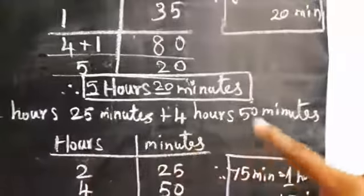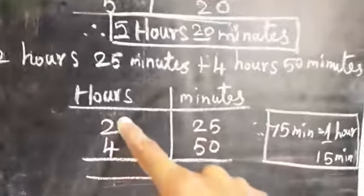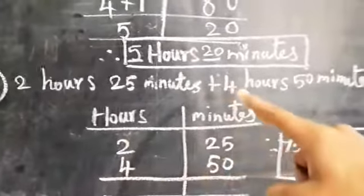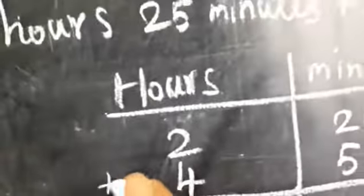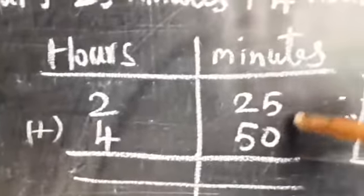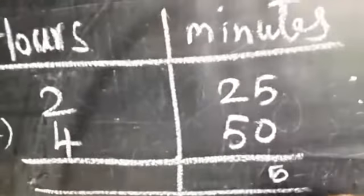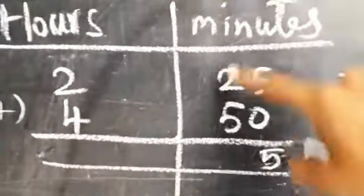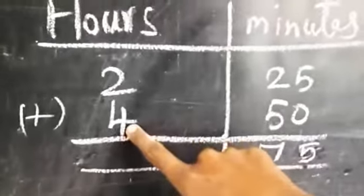Third sum: 2 hours 25 minutes plus 4 hours 15 minutes. Write 2 hours 25 minutes, then 4 hours 15 minutes below. Now add the minutes: 5 plus 5 equals 10 — wait, 5 plus 0 equals 5, then 2 plus 5 equals 7. So minutes total is 75.